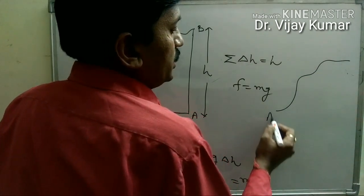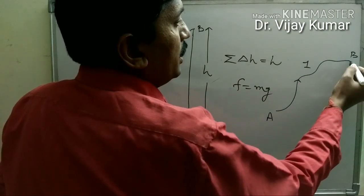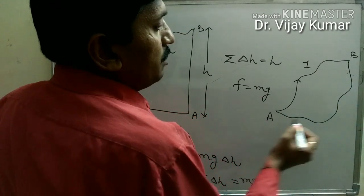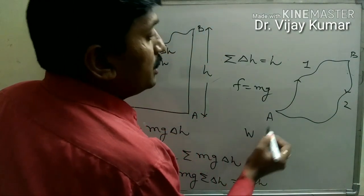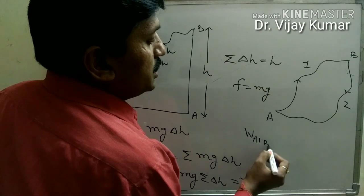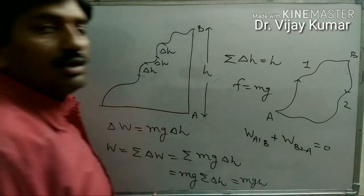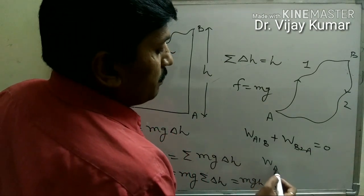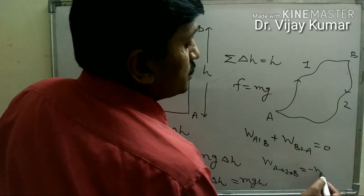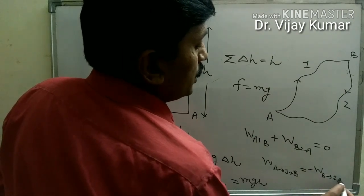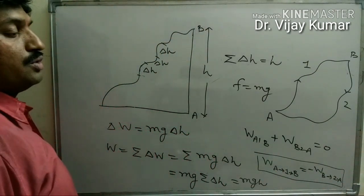Suppose a body moves from A to B by path A1B, completing a round trip, and then returns by path B to A. The work done by path A1B plus the work done by path B to A is always equal to zero. In other words, the work done by path A1B equals minus the work done by path B to A.